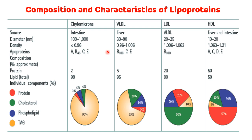Now we will see the protein and lipid content of each lipoprotein. Chylomicron contains the least protein content at 2%, while HDL contains the highest protein content at 50%. Chylomicrons contain the highest lipid content at 98%, while HDL contains the lowest lipid content at 50%. Chylomicrons have the highest triacylglycerol content at 90%; the lowest triacylglycerol is in HDL at 5%. The highest cholesterol is in LDL at 50%, and the highest phospholipid is in HDL at 30%.